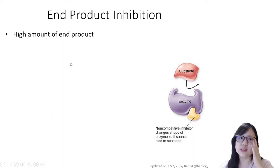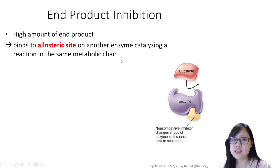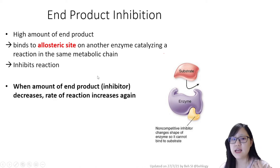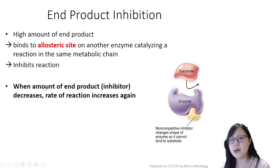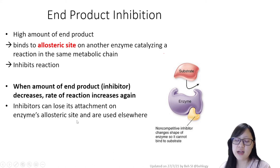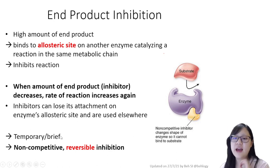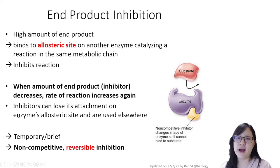To summarize end-product inhibition: when there is a high amount of end product, it binds to the allosteric site on an enzyme catalyzing the reaction in the same metabolic chain, and this inhibits the reaction. When the amount of end product decreases — used somewhere else or depleted — the rate of reaction increases again because the product can lose its attachment on the allosteric site. This is an example of reversible non-competitive inhibition — it only binds temporarily, but can detach when concentration is low and the reaction can continue.